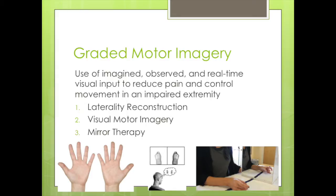This theory has been broken down into a three-step process of laterality reconstruction, visual motor imagery, and finally the most commonly recognized and applied component, mirror therapy. It is primarily used in populations where pain is restricting occupational participation, such as chronic regional pain syndrome or CRPS, phantom limb pain — usually secondary to an amputation — stroke patients, and other hand conditions. New research is constantly surfacing in the literature supporting this theory in previously untested populations.